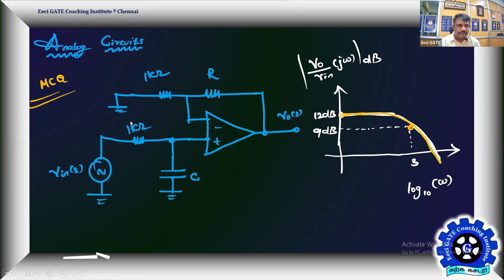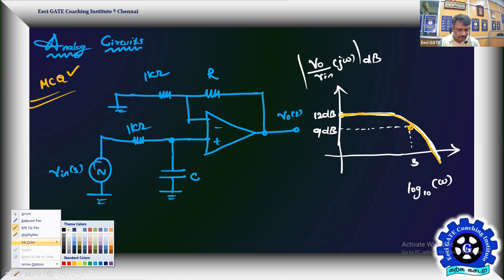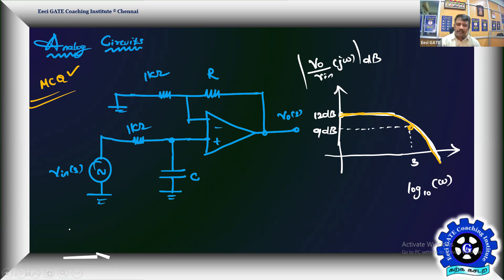That's a problem from analog electronics, a two marks MCQ problem. What is given is an operational amplifier circuit with output labeled as V0 and input labeled as Vin, and its frequency response analysis data. Its frequency response is given as MdB versus log10(ω). Play carefully there, don't take ω equal to 3 radians per second, you have to take log10(ω) equal to 3.